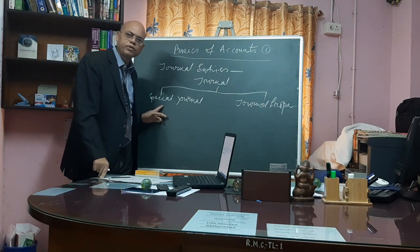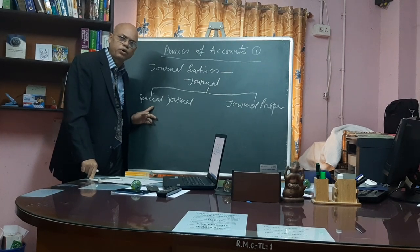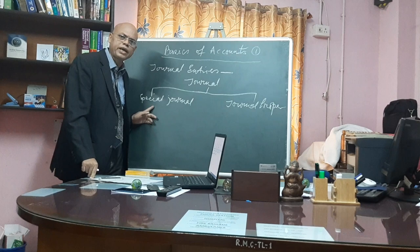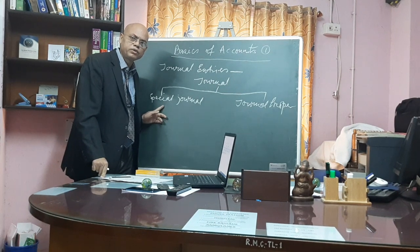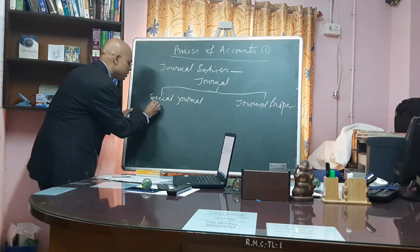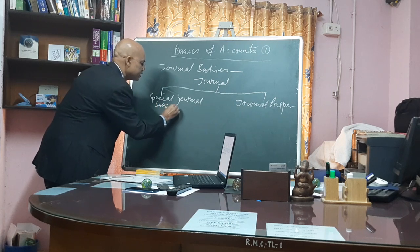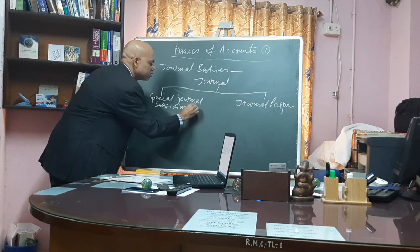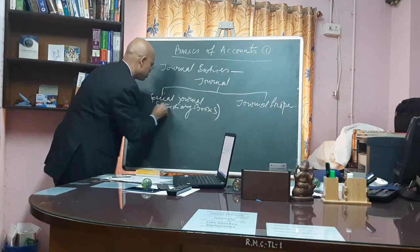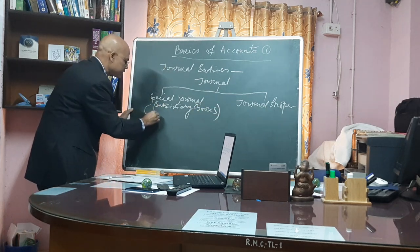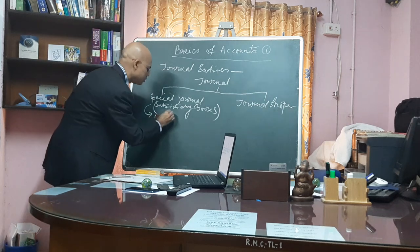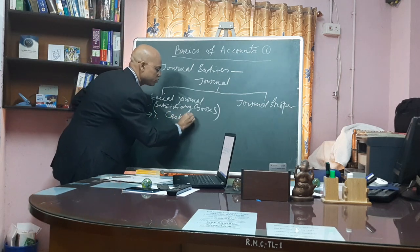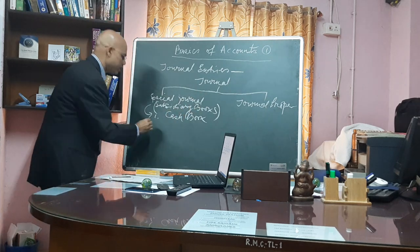What is special journal? As and when transactions occur in the business, those transactions are recorded by using any one of the subsidiary books under special journal. The subsidiary books under special journal are: number one, cash book; number two, purchase day book.